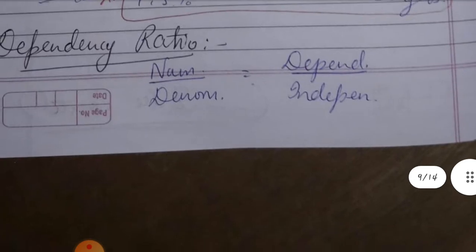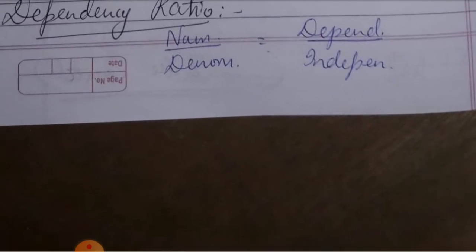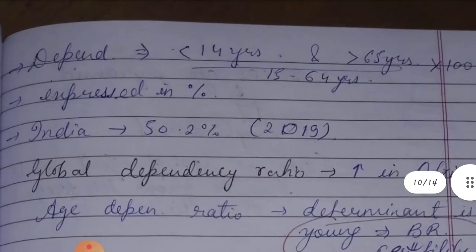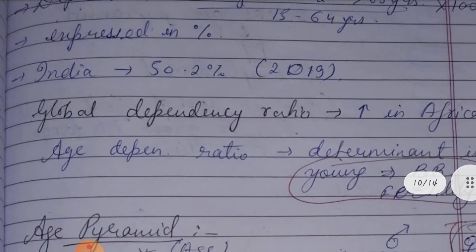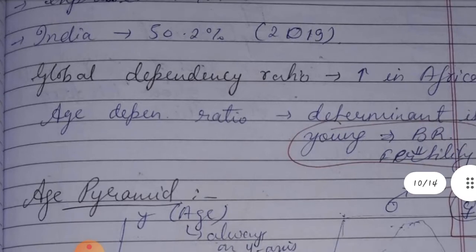Now, what is the Dependency Ratio? The Dependency Ratio is dependents divided by independents. Dependents are those less than 14 years and greater than 65 years of age. Non-dependents are those aged 15 to 64 years. In India, the dependency ratio is about 50.2% based on 2019 data.